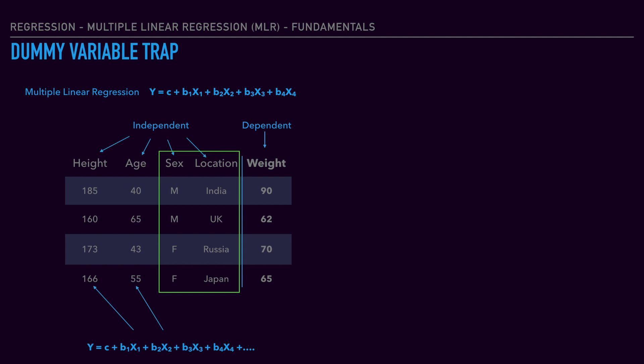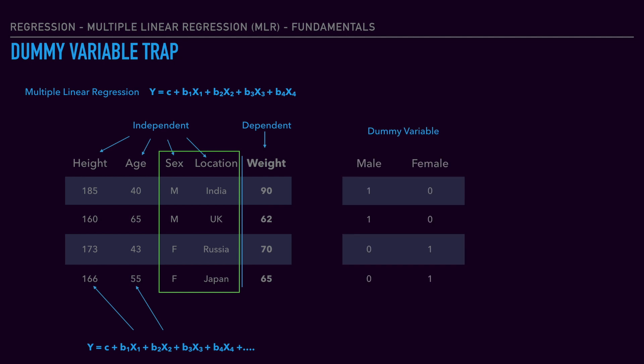To get a more detailed understanding of the dummy variable trap, we will take the sex variable alone. Let's look at 2 categorical values: 1 male and 1 female. We will convert each individual category into a dummy variable column — a male column and a female column. We place a 1 in the male column where the record is male.